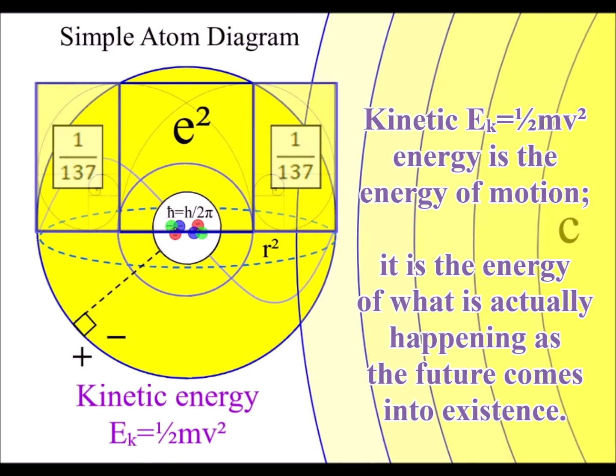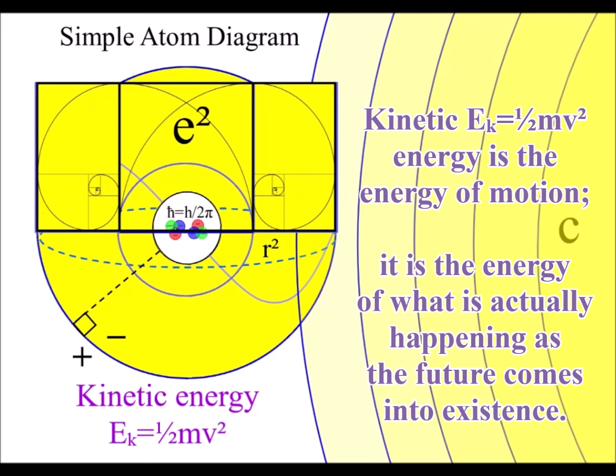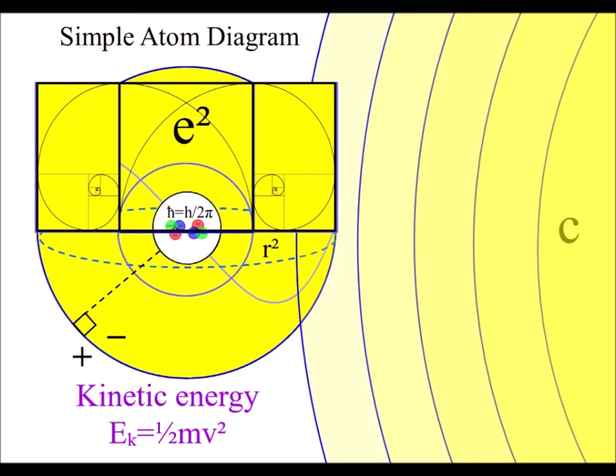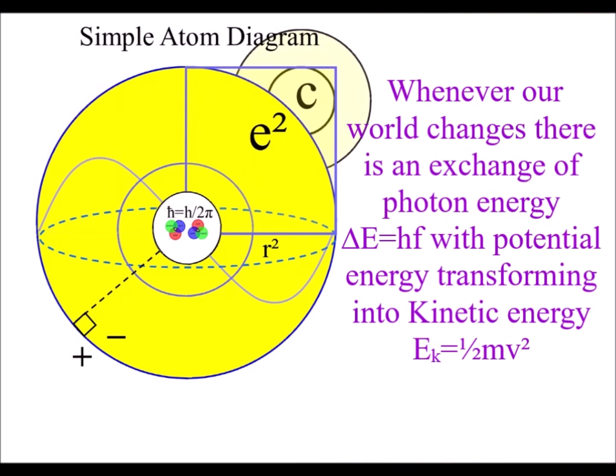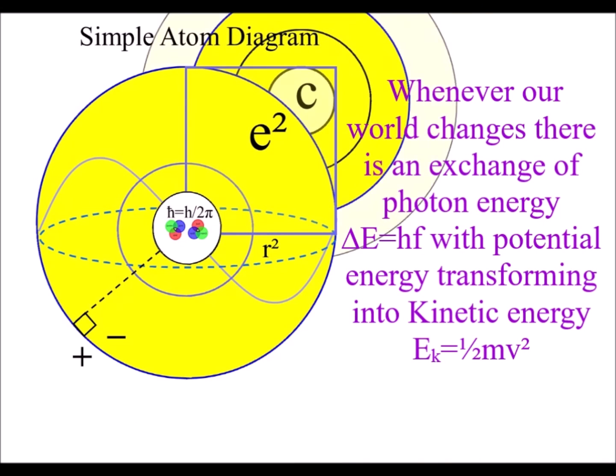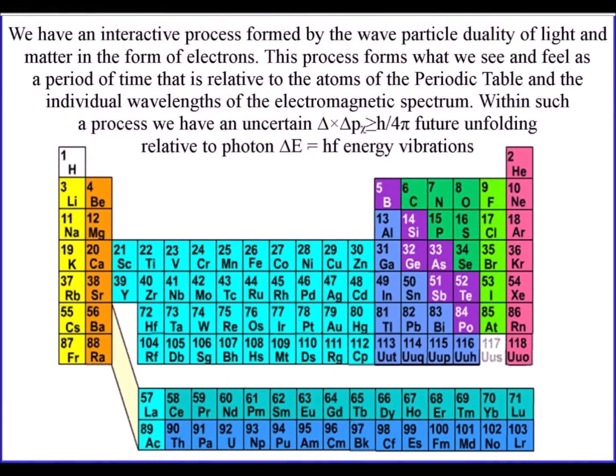Kinetic energy is the energy of what is actually happening. This geometrical process formed by the spontaneous absorption and emission of light photon energy is continuously forming a probability of a probabilistic uncertain future.